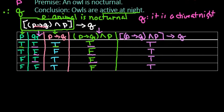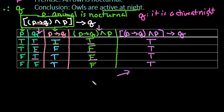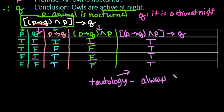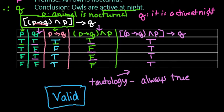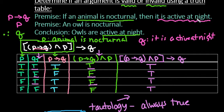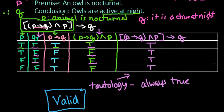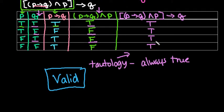You can see that at the end we end up with all true values. This is known as a tautology, which means it's always true, which means that this is a valid argument. The argument we were given — if an animal is nocturnal then it is active at night, and an owl is nocturnal — lets us reach the valid conclusion that owls are active at night. This is a valid conclusion because the truth table showed a tautology for the statements in symbolic form.